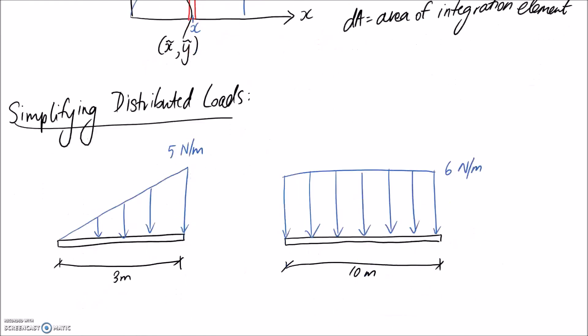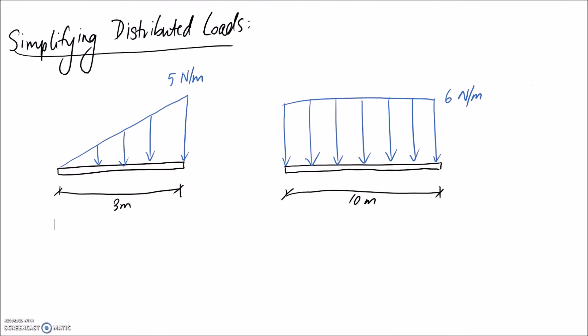So I'm now going to move on to simplifying distributed loads. And this follows very closely with the centroid concept. For this first one, I've given an example where we have a varying distributed load. And it gets to a maximum of 5 newtons per meter. And it's over a distance of 3 meters. So my intention here is to simplify this distributed load into one point load, acting at an equivalent distance.